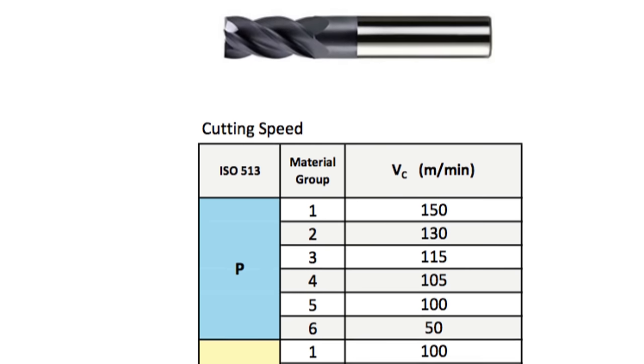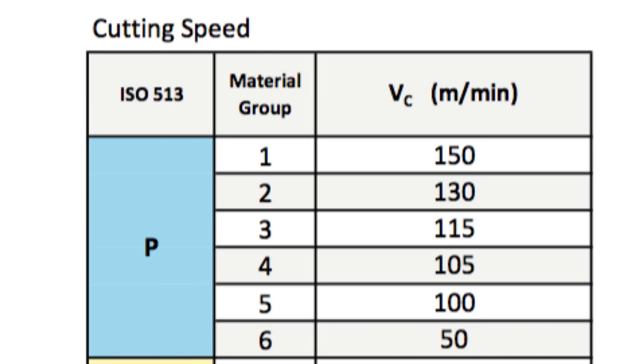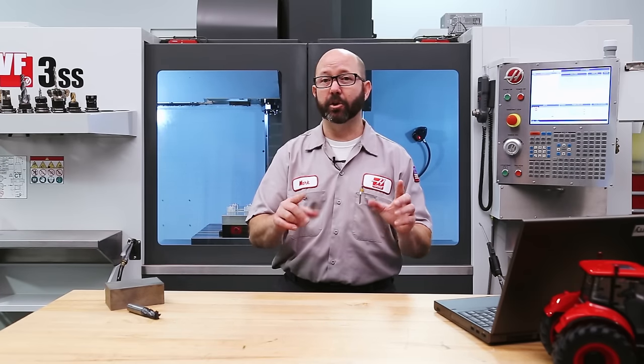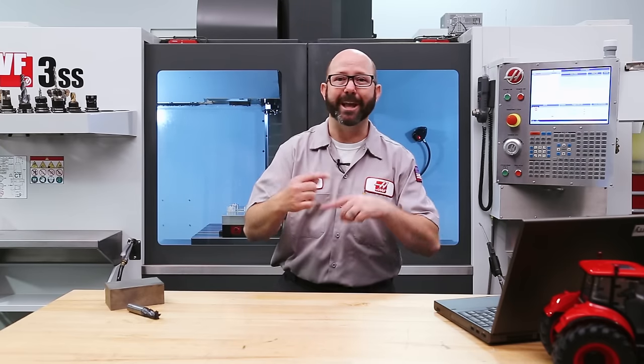From the section of the manual for our exact tool, under the row that lists our material group — P5 in our case — we're going to find our cutting speed, our VC, our meters per minute. If your catalog gives you a range of values, you'll make your choice based on the length of your tool, how strong your setup is, and how aggressive you tend to cut. In general, the more rigid the setup, the faster we can go with our cutting speeds. But remember, tools tend to last longer and have better tool life at lower cutting speeds.